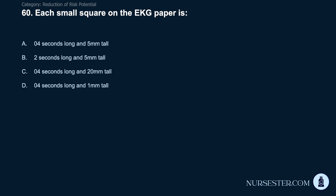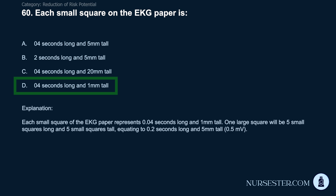Question 60: Each small square on EKG paper is: A) 0.4 seconds long and 5mm tall. B) 0.2 seconds long and 5mm tall. C) 0.4 seconds long and 20mm tall. D) 0.04 seconds long and 1mm tall. Correct answer: D. 0.04 seconds long and 1mm tall. Each small square of EKG paper represents 0.04 seconds long and 1mm tall. One large square will be 5 small squares long and 5 small squares tall, equating to 0.2 seconds long and 5mm tall.